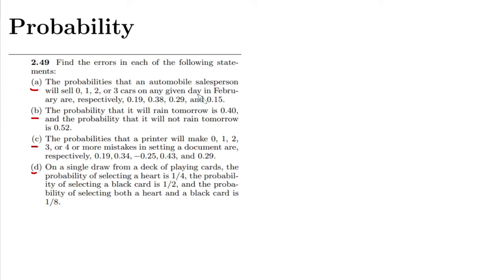The first statement is: the probabilities that an automobile salesperson will sell 0, 1, 2, or 3 cars on any given day in February are respectively 0.19, 0.38, 0.29, and 0.45.